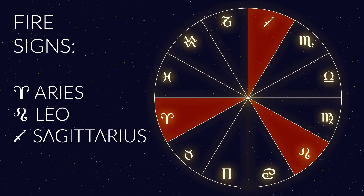So now we're going to talk about each of the elements, and we're going to start with the fire signs. The three fire signs are Aries, Leo, and Sagittarius. Fire signs are often characterized as being passionate, driven, a little competitive, sometimes aggressive, very energized, extroverted, etc. You see the qualities of heat and dryness come through really clearly with fire signs.